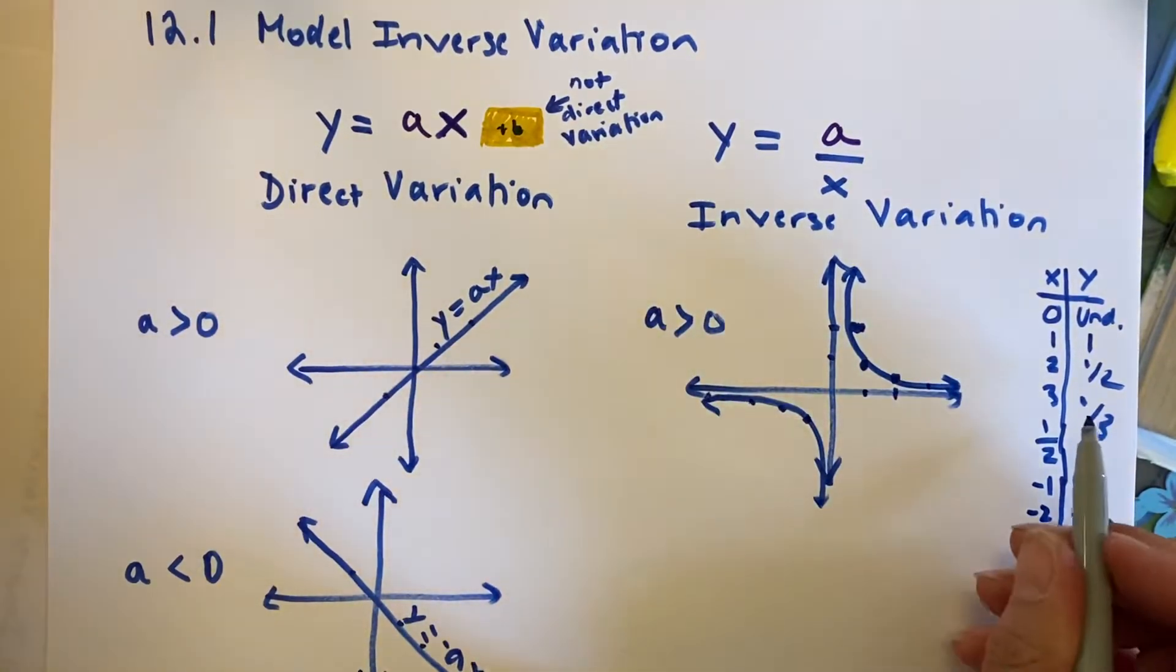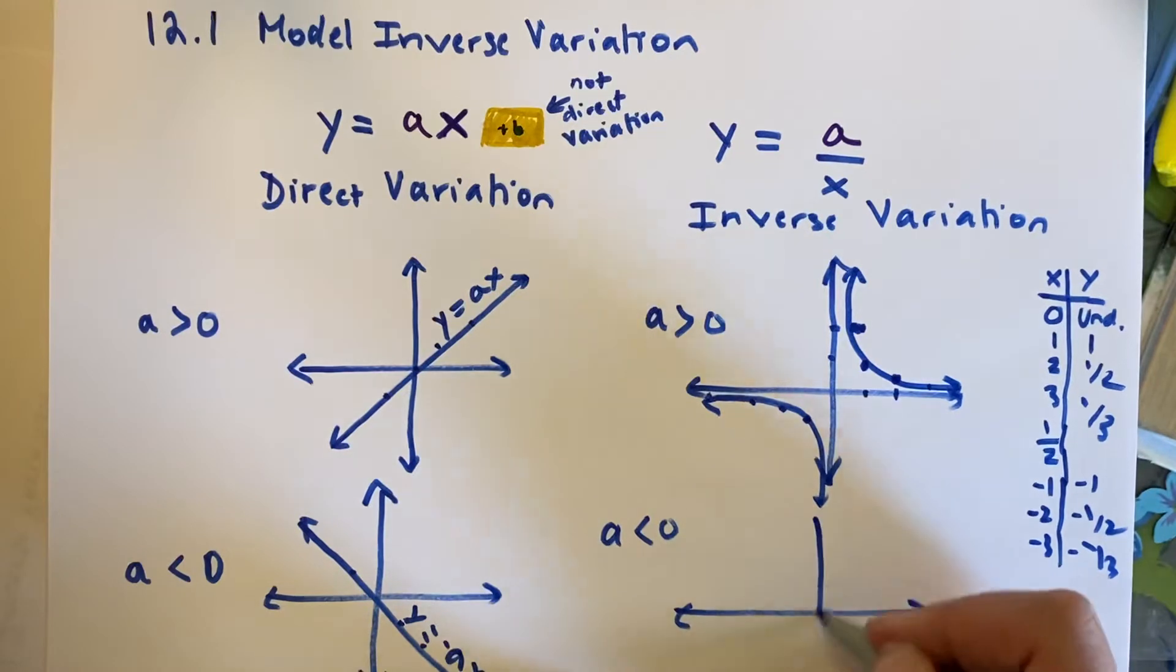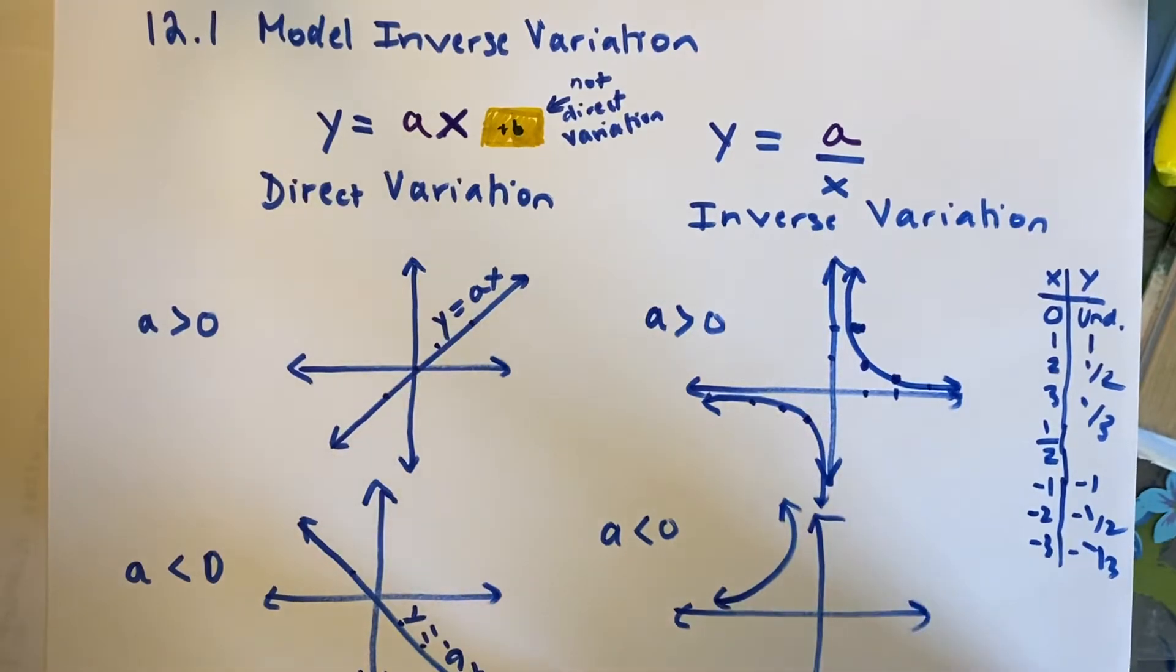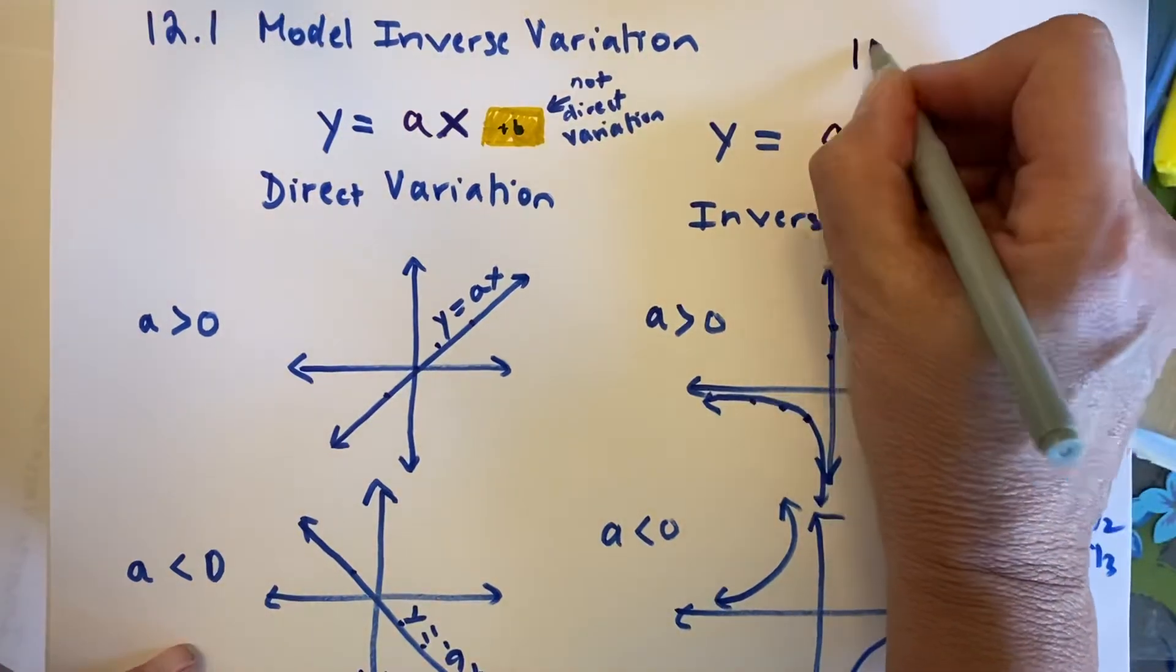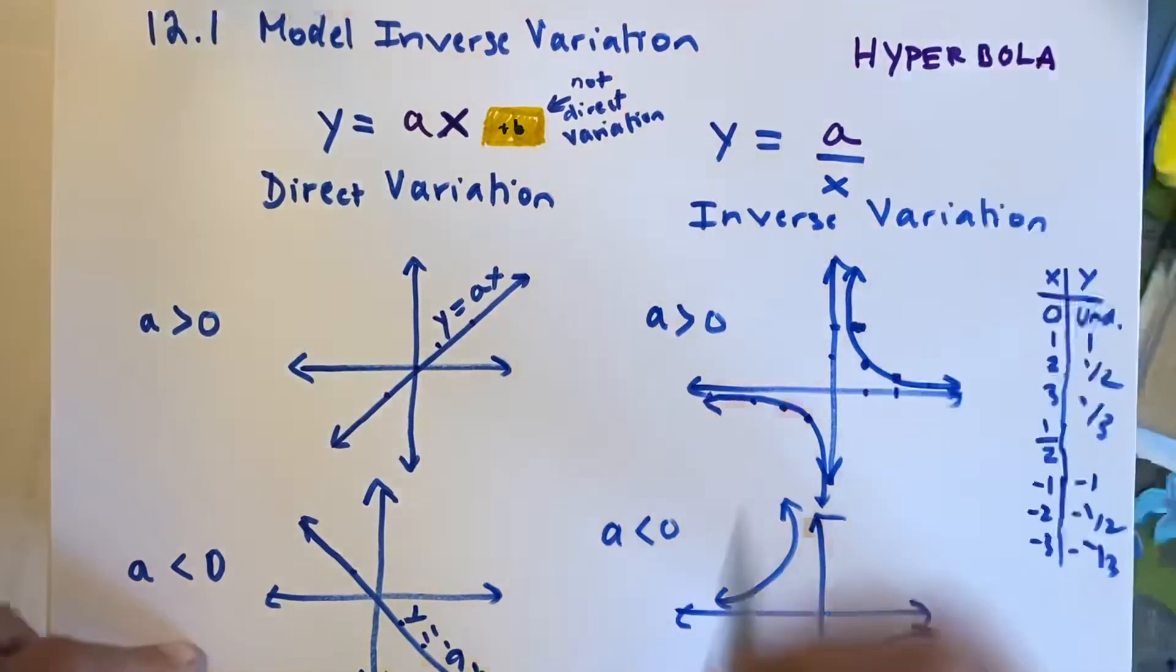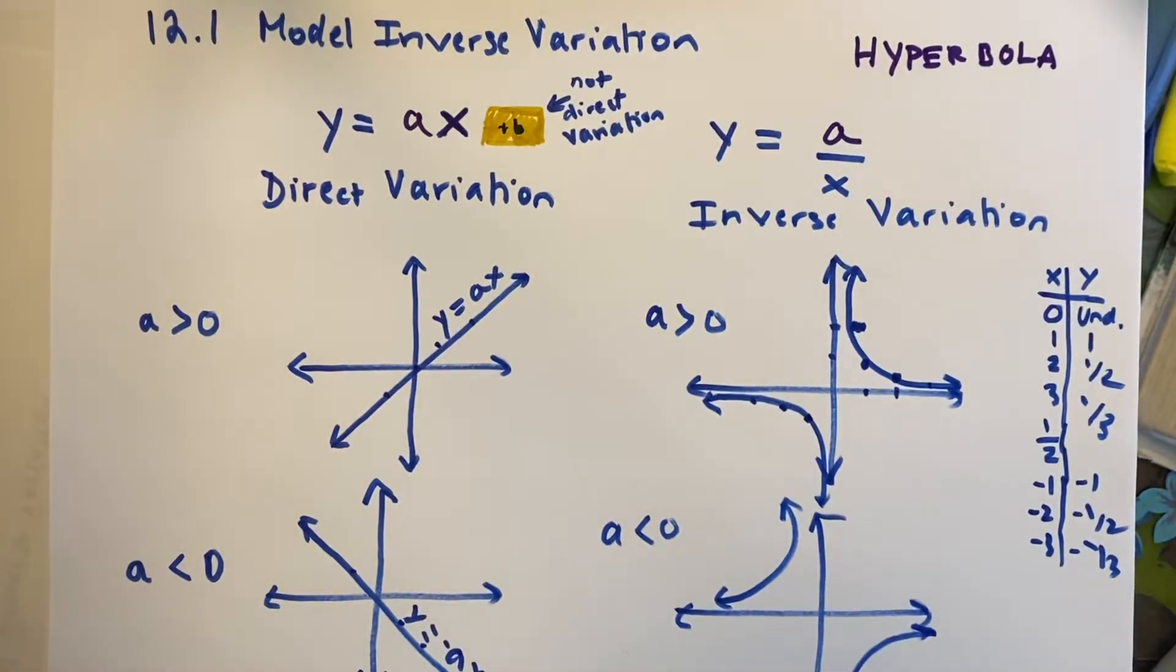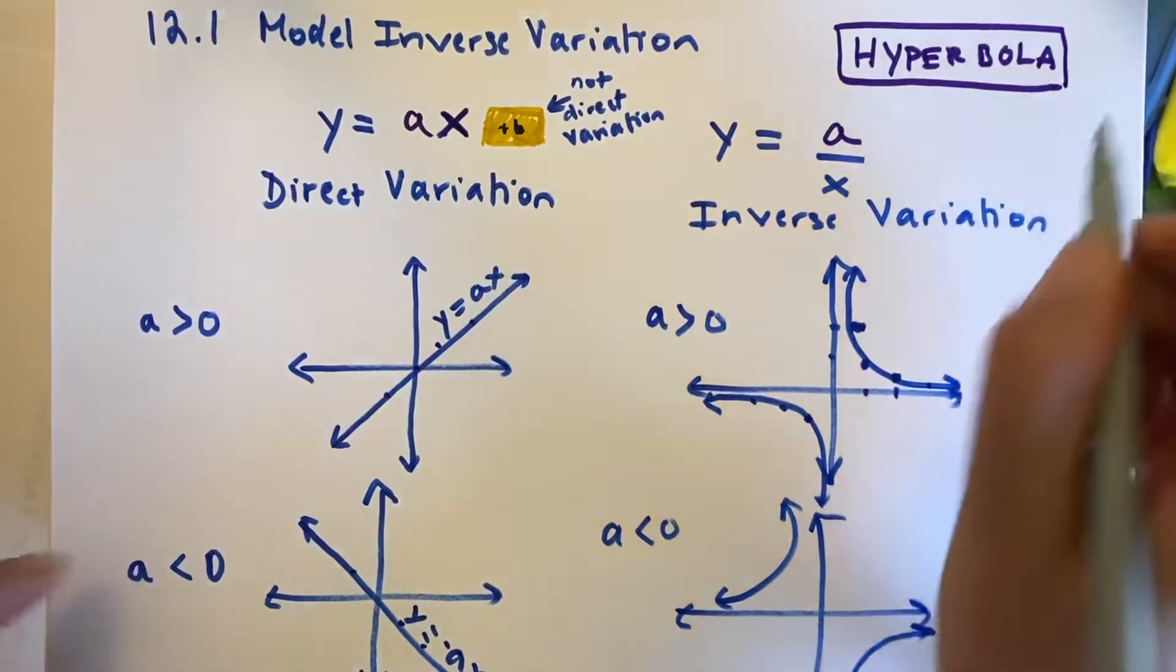And you'll find, if I were to do this, where a is negative, in other words, a is less than 0, you're going to see the same idea. You're going to see a curve going here, and I know I'm slightly off the page, but add a curve down here. So, inverse variation creates this really interesting function, which is called, I'll put it up here, a hyperbola. And we're going to look at what that hyperbola looks like and what kind of situations it models.